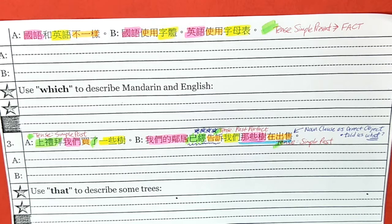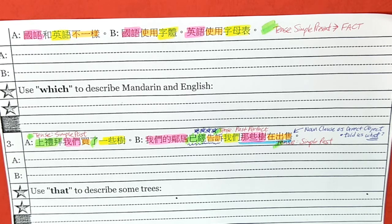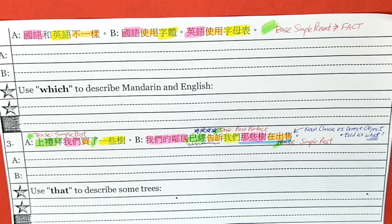Let's look at question number two. Use your colors — find the verb, color the verb, find the subject, find the object. Then use your green color to determine the tense. In both these sentences, the tense is simple present. Why? We are talking about a fact. If we talk about a fact, that is simple present.